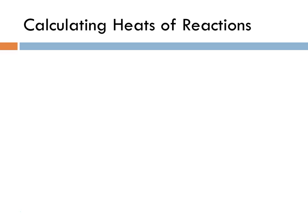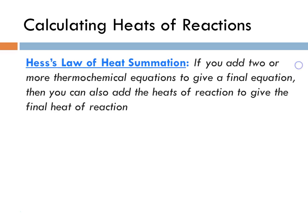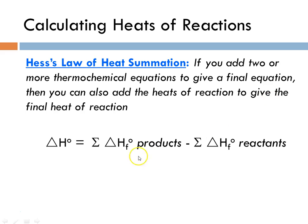We're calculating heats of reactions, and Hess's law of summation tells us that if you add two or more thermochemical equations to get the final equation, then you can also add the heats of reaction to give the final heat of reaction. The equation delta H for the reaction is equal to the sum of the delta H of formation for the products minus the sum of the delta H of formation for the reactants.